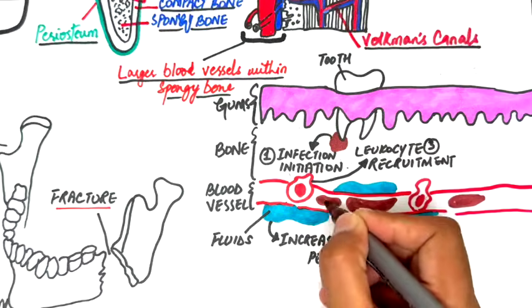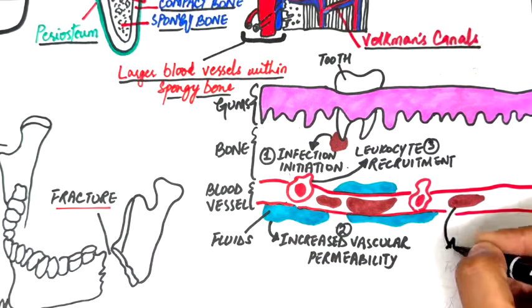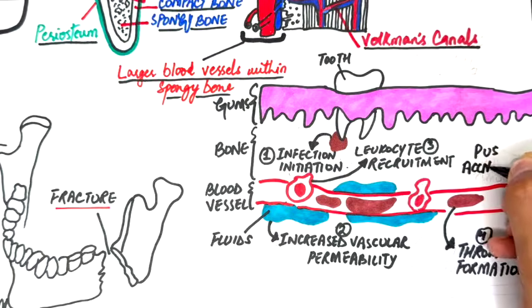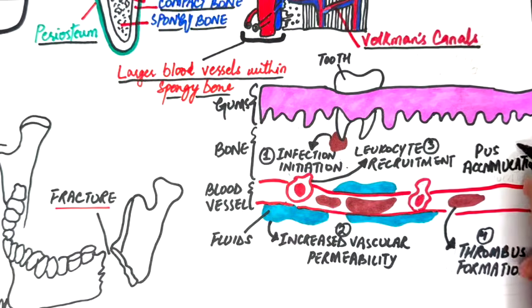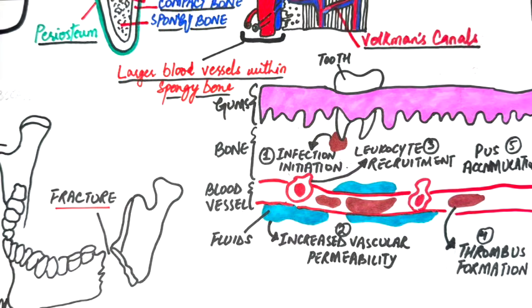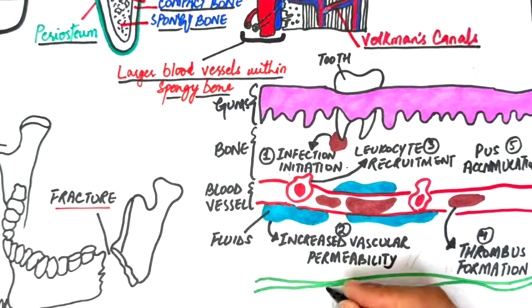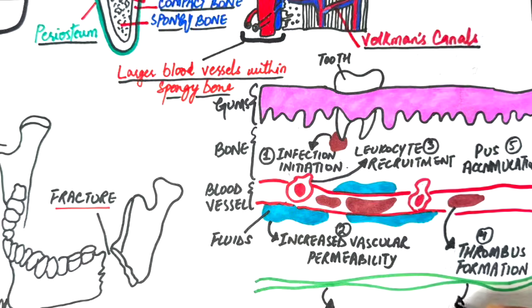As the infection continues to grow, blood clots form in blood vessels, causing ischemia, which worsens the infection. The pus keeps accumulating, increasing pressure within the bone and causing vascular collapse and further tissue necrosis as the blood supply is compromised. The pus accumulation may also compress nearby nerves, leading to numbness, tingling, or paresthesia of the jaw.